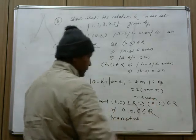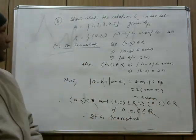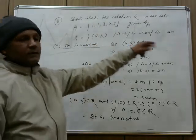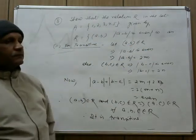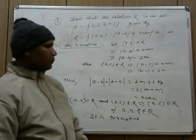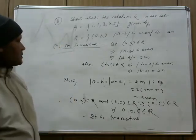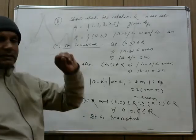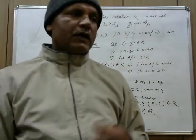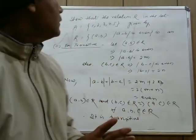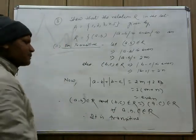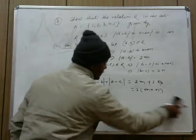Since the relation R is reflexive, symmetric, and transitive, it is an equivalence relation. The first part of question 8 is proved. Please write this in your notebook: since R is reflexive, symmetric, and transitive, it is an equivalence relation.